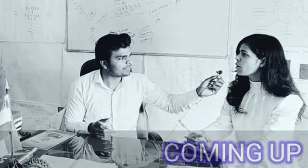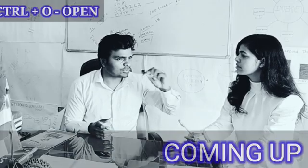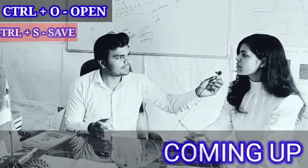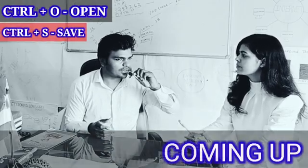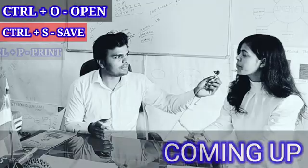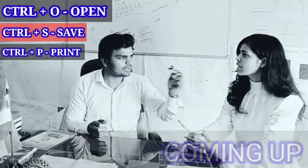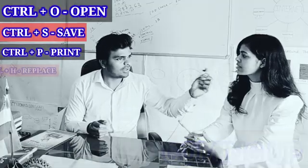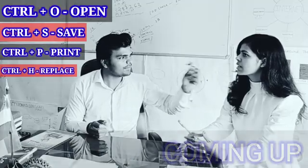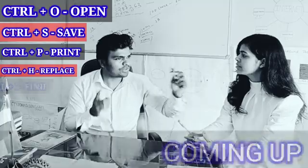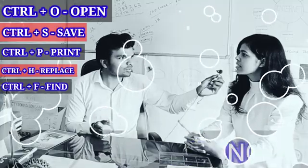Ctrl O for? Open. Ctrl S for? S for save. And Ctrl P for? Print. Ctrl H for? Replace. Ctrl F for? Find. Ctrl C? Copy.